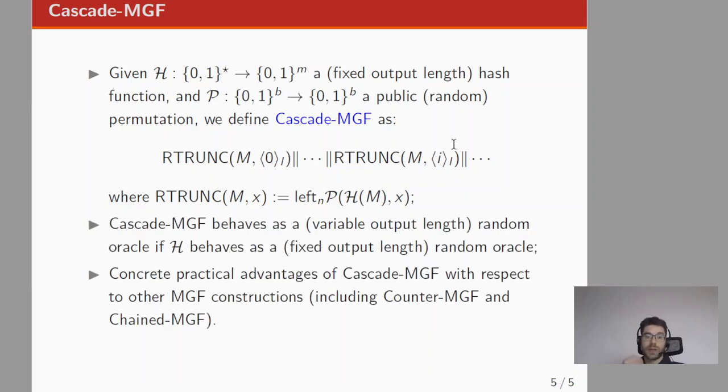This construction behaves as a variable output length random oracle if H behaves as a fixed output length random oracle. More interestingly, in the paper we prove that this construction has concrete practical advantages with respect to other MGF constructions, including Counter-MGF and Chained-MGF.